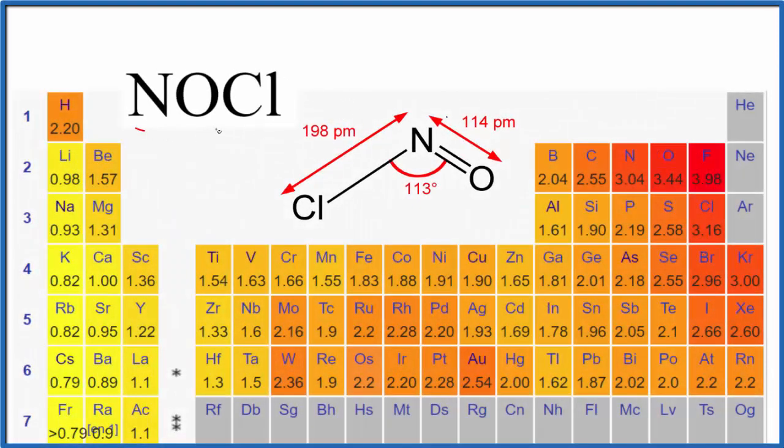In this video we'll look at whether NOCl is polar or nonpolar. Note in the structure the nitrogen is in the center. The first thing we'll want to do to figure out whether NOCl is polar or nonpolar is to look at the electronegativity difference of the different elements.